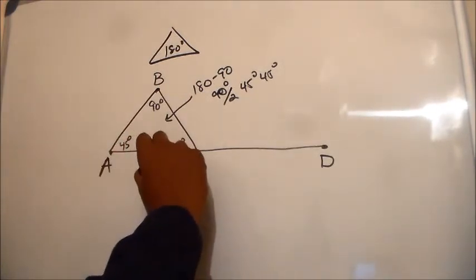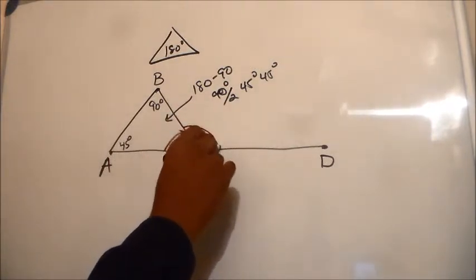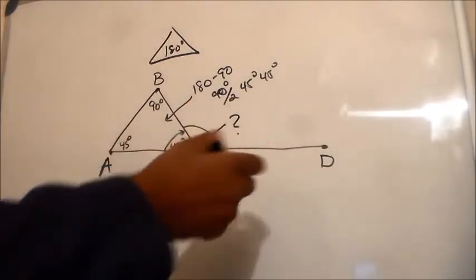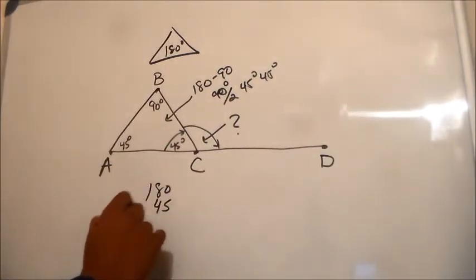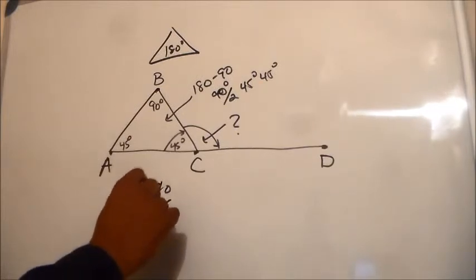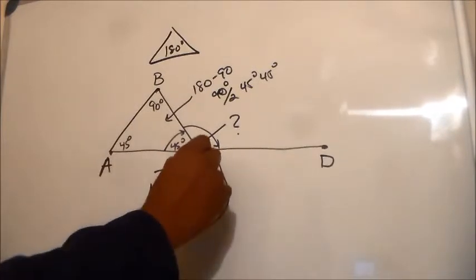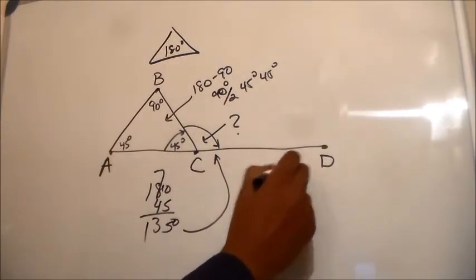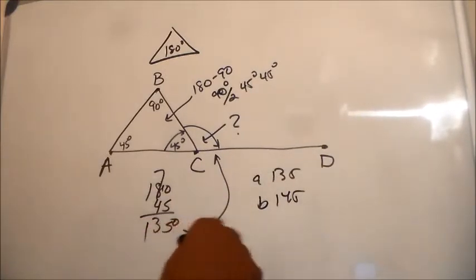So now if this is a straight line, they want to know what angle is this. Well in a straight line it's 180 degrees, so 180 minus 45, this angle is 135 degrees. So in our answers it's A. You got 135, B was 145, C was 90, and D was 180.